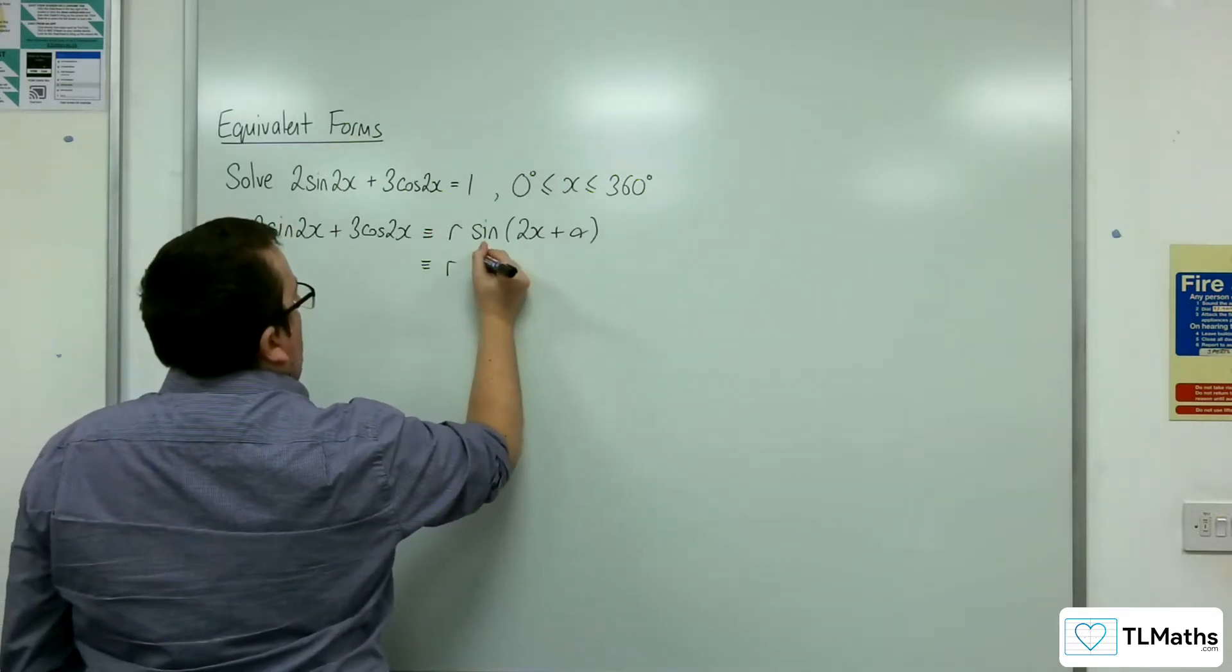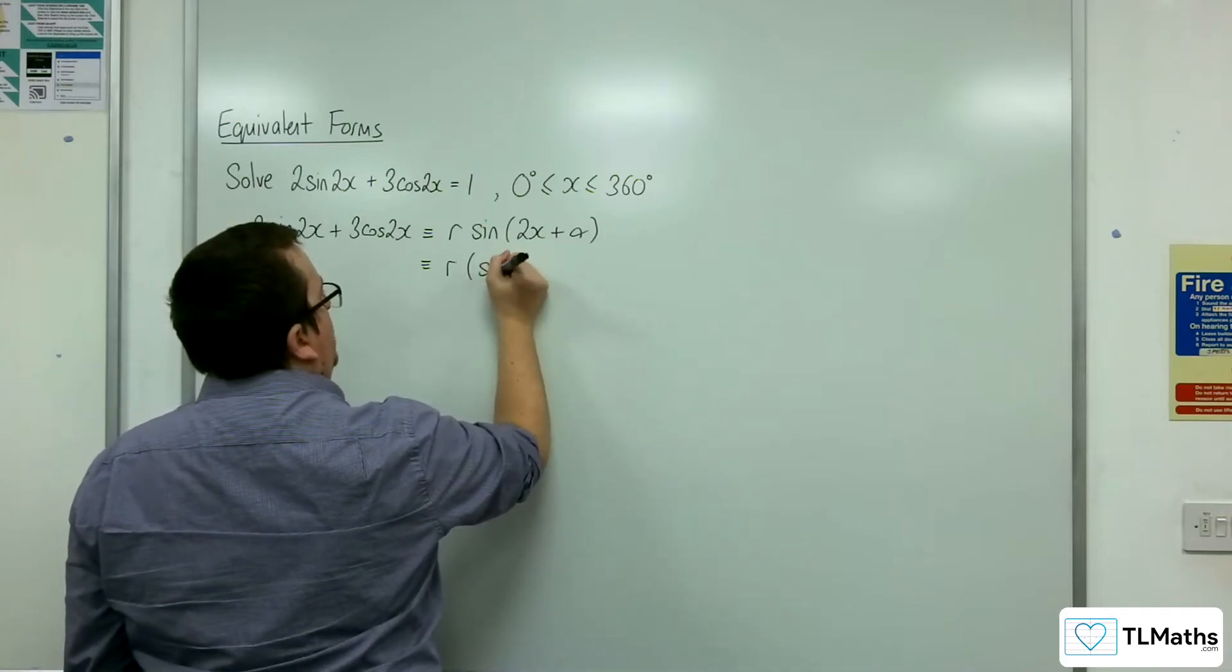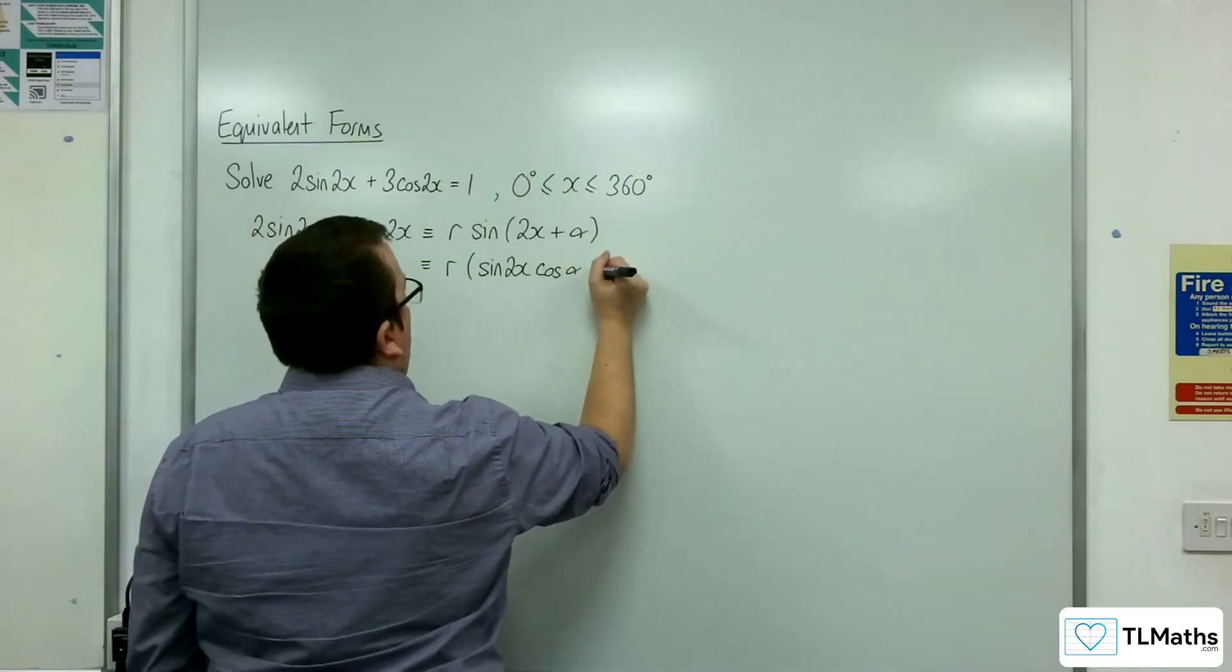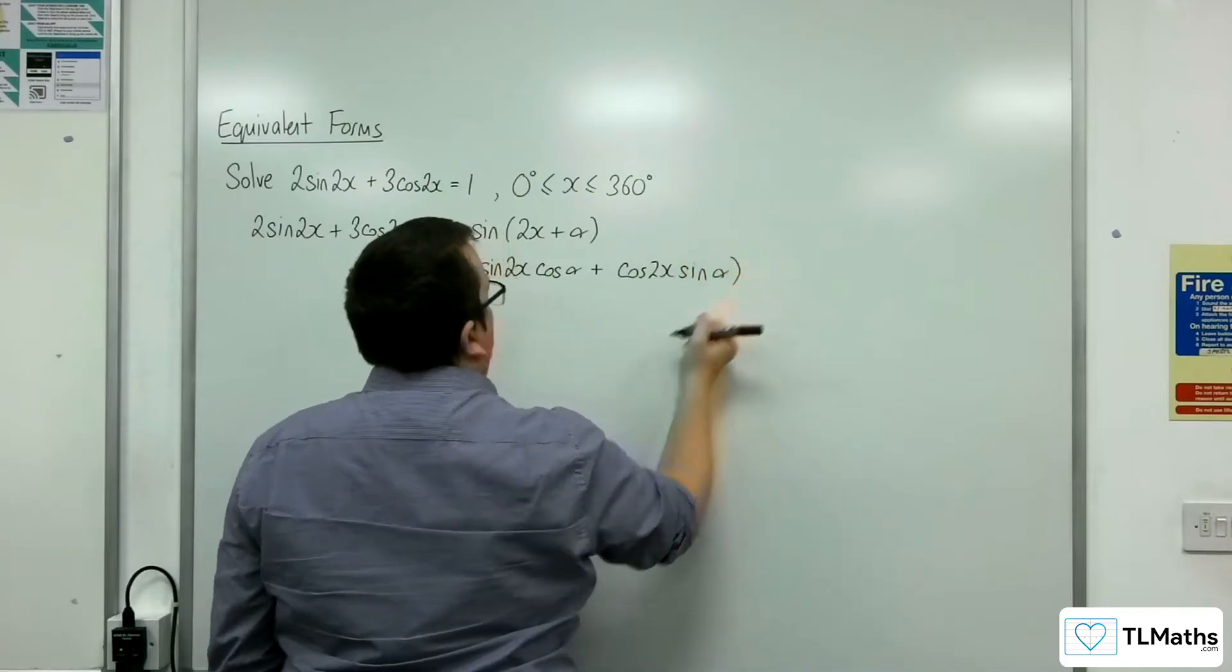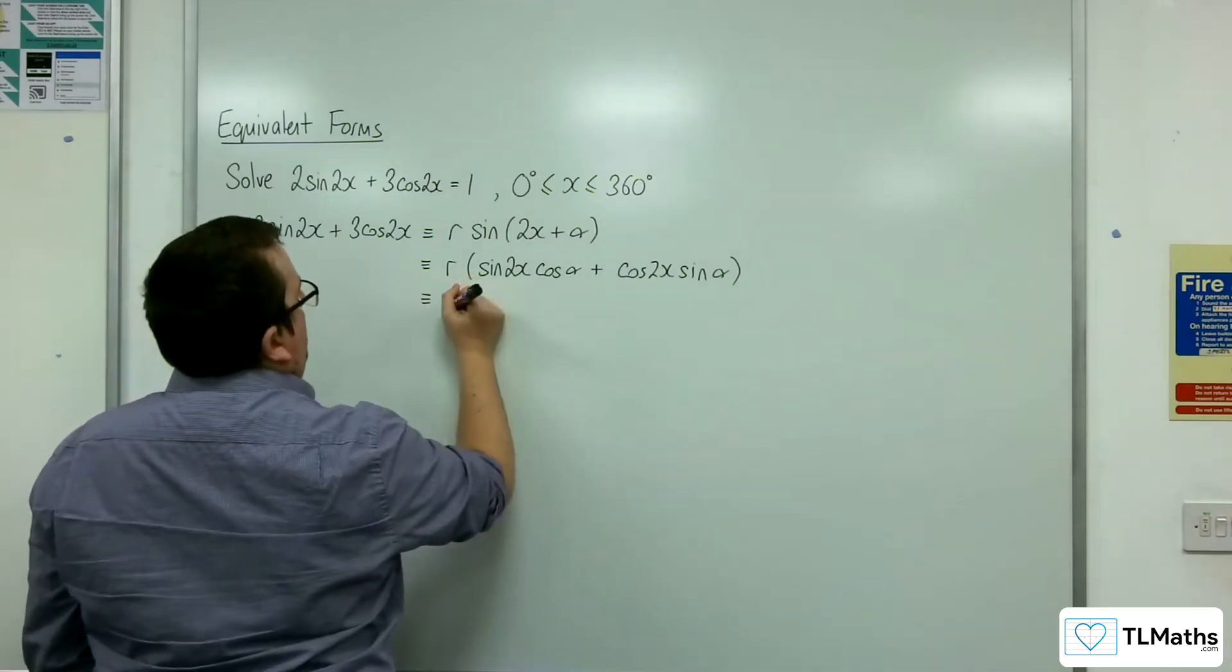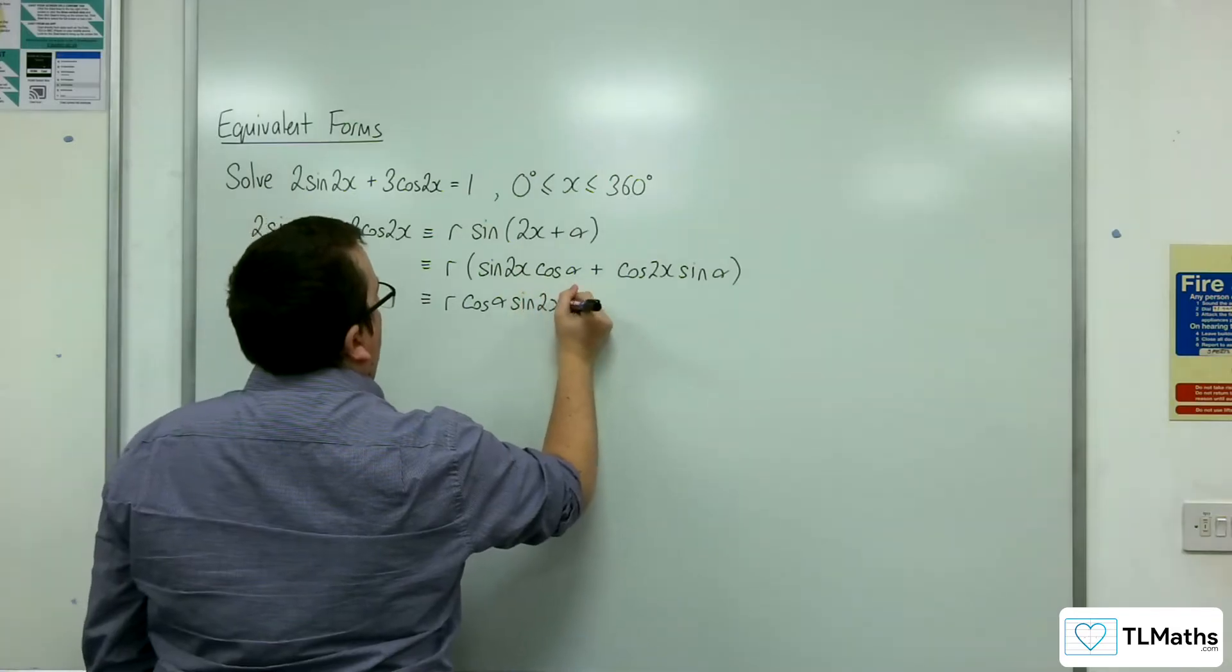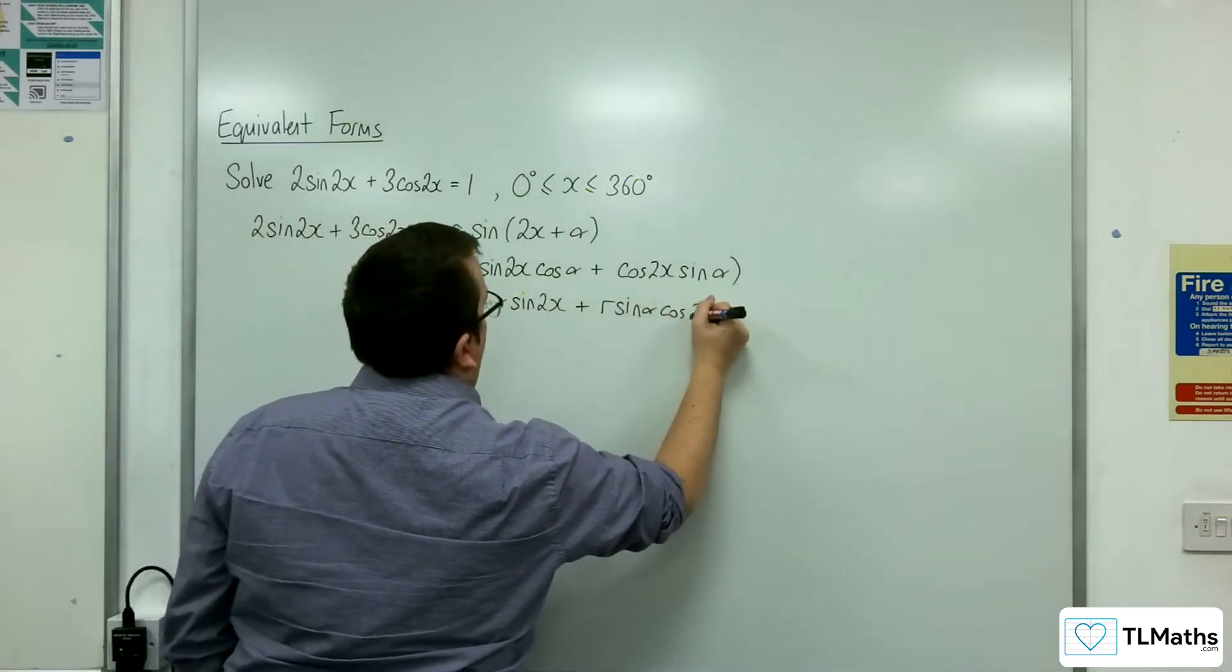So I'm going to have r lots of, now expanding that using the compound angle formula, that's sin2x cos alpha plus cos2x sin alpha. I'm going to expand that out and bring the alphas to the front, so we've got r cos alpha sin2x plus r sin alpha cos2x.